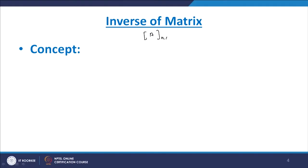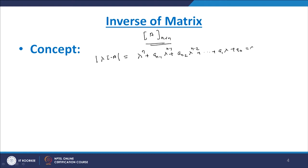We start with the concepts. Our main input is an N×N matrix A. We take the determinant of (λI − A), which equals λᴺ + a_{N−1}λᴺ⁻¹ + a_{N−2}λᴺ⁻² + … + a₁λ + a₀ = 0. This is the characteristic polynomial. When working in the S-domain, we can write S instead of λ. Our aim is to get the inverse, so we will apply the Cayley-Hamilton theorem.